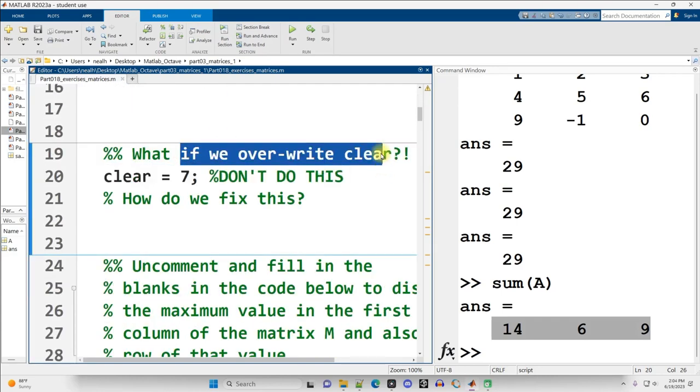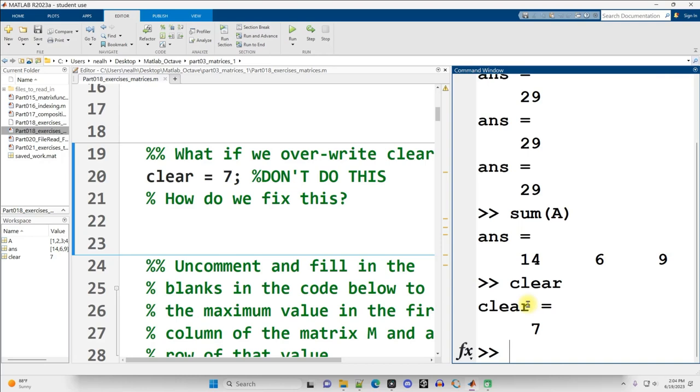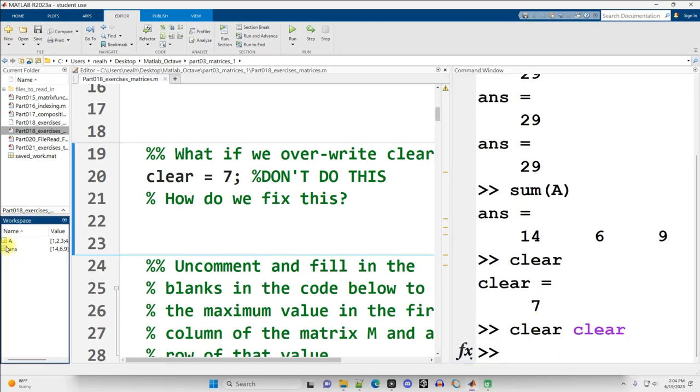And since sum and other functions operate on columns, there's only one column. It'll get the overall sum. Continuing on down. What do we do if we overwrite clear? So the problem is that now I can't use the clear command to empty my workspace because clear means the number seven. Now, this is actually slightly different in octave as in MATLAB. So in MATLAB, I can just say clear clear, and that will work perfectly.